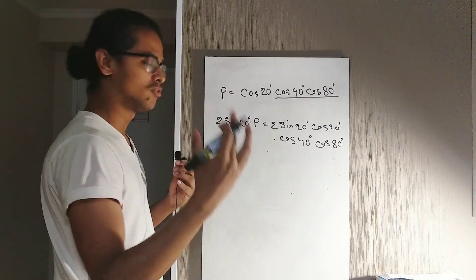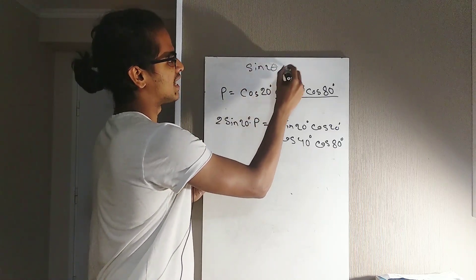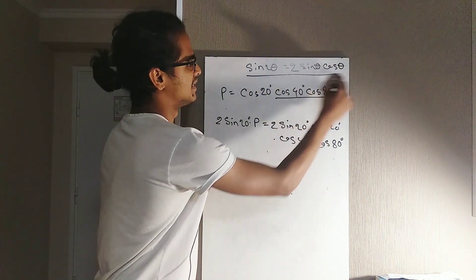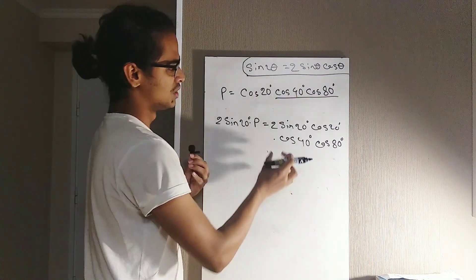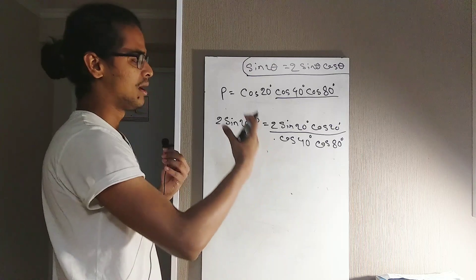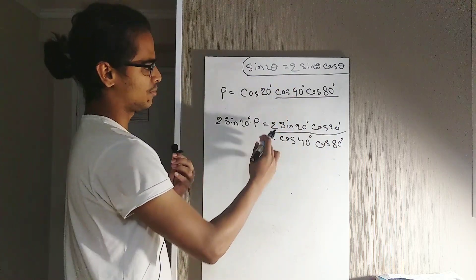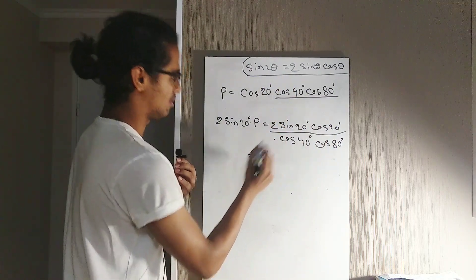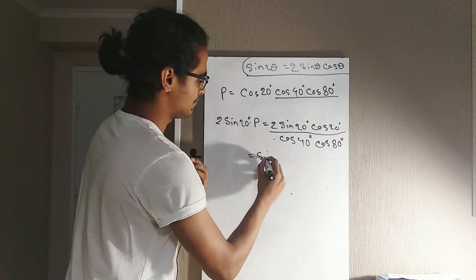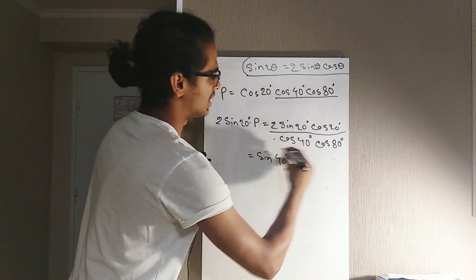We're going to use the trigonometric formula sin 2θ = 2 sin θ cos θ. As you can see, after multiplying the right-hand side by 2 sin 20°, we transform it into something we know. So I can write 2 sin 20° · cos 20° as sin 40°, giving us sin 40° · cos 40° · cos 80°.